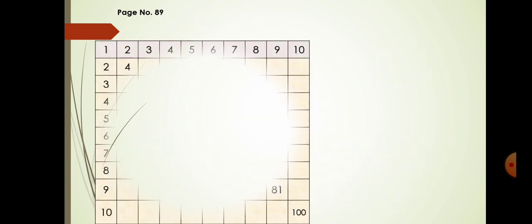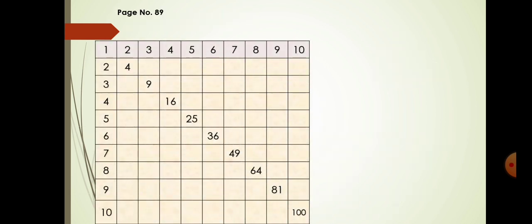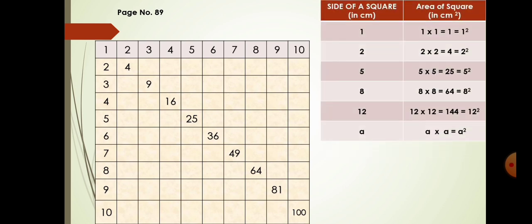Moving on to properties of squares. You can see: 2×2=4, 3×3=9, 4×4=16, 5×5=25, 6×6=36, 7×7=49, 8×8=64, 9×9=81, and 10×10=100. When the side of a square is 1 centimeter, the area is 1×1. The formula is side × side, that is L × L, and with that formula we get the square.